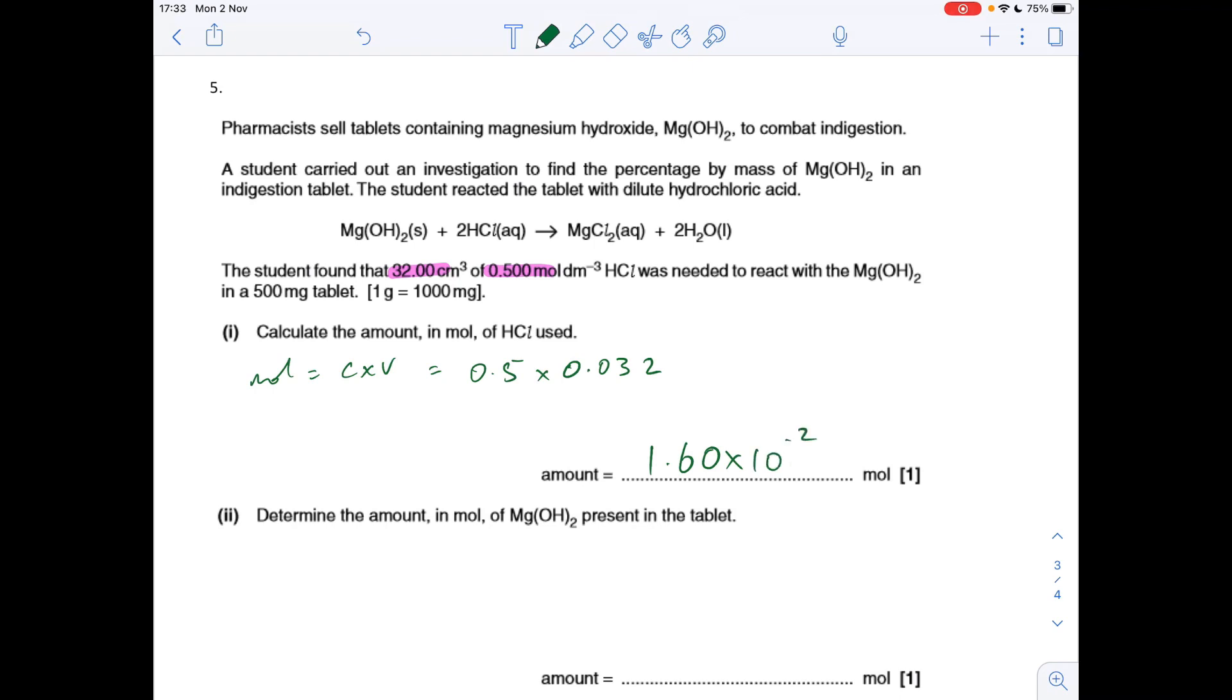Second part now: how many moles of magnesium hydroxide must be present in the tablet? We've got a 2 to 1 ratio, so it's going to be half as many. That's 8.00 times 10 to the minus 3.